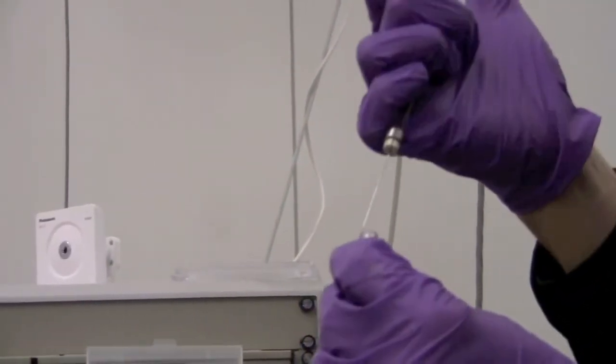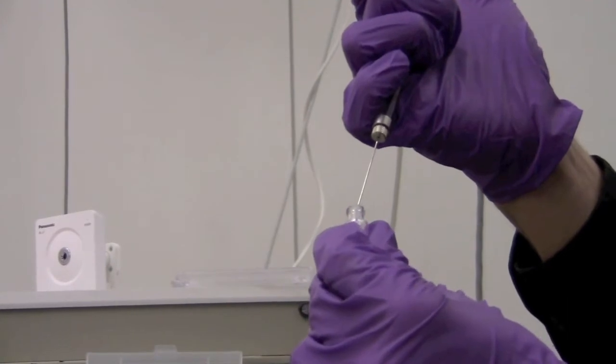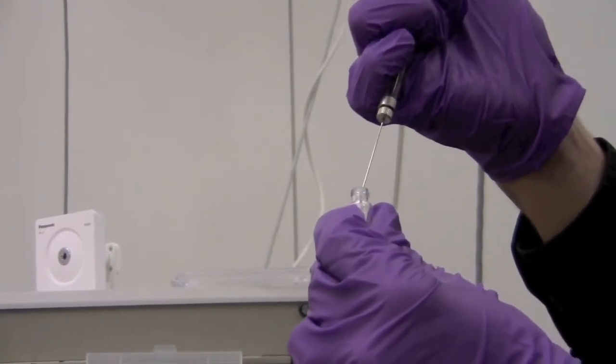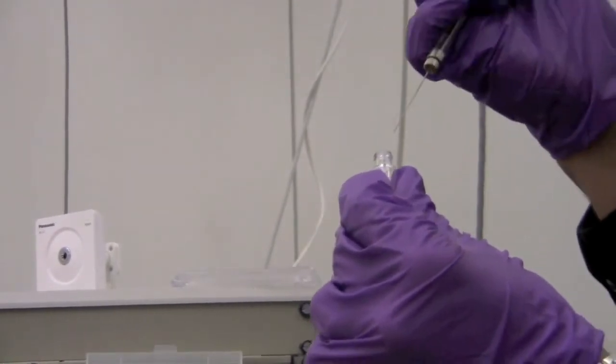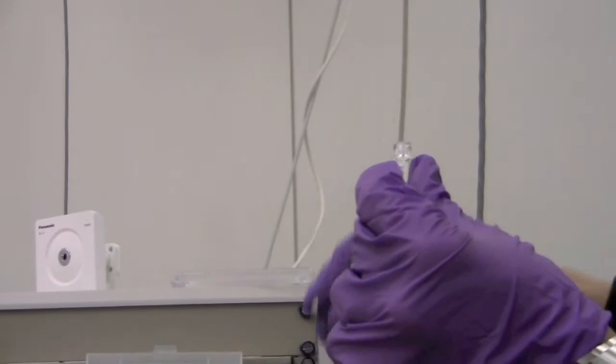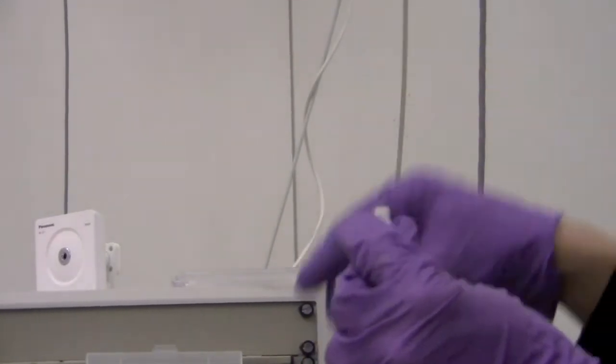And we're going to put it into the top of the filter tip. An alternative is you can put a small amount of dry sample into the top of the filter tip and then load 50 microliters of DMSO on top of it.